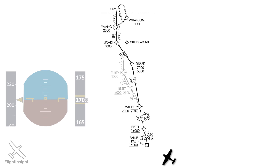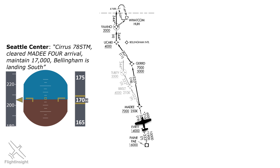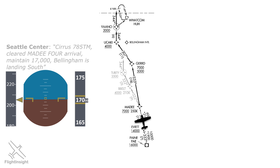Let's use that case as an example. We're coming from the enroute phase at 17,000 feet, about 205 knots indicated. We've been told that Bellingham is landing south, meaning we'll be taking that route from MADI to GERD. So we fly to Payne, but we have to stay at 17,000, as we weren't told to descend via the arrival. We pass Evert staying at that altitude, and now are told to descend via.